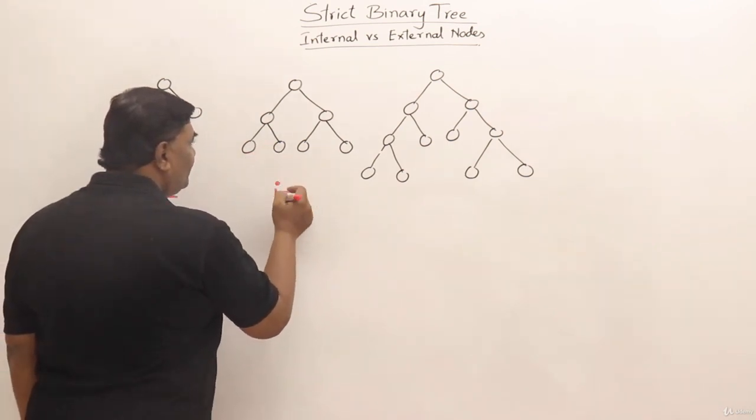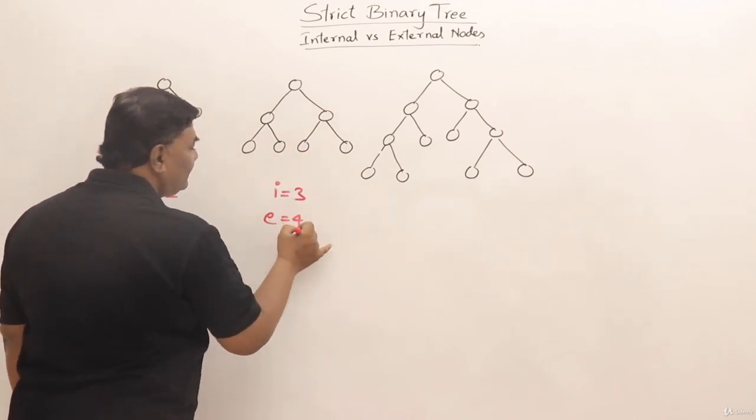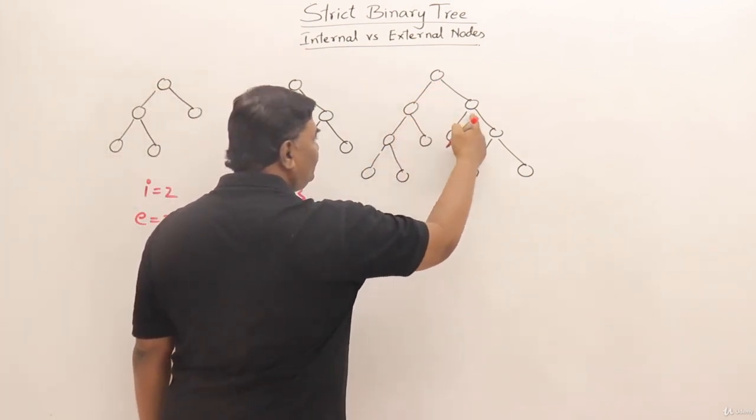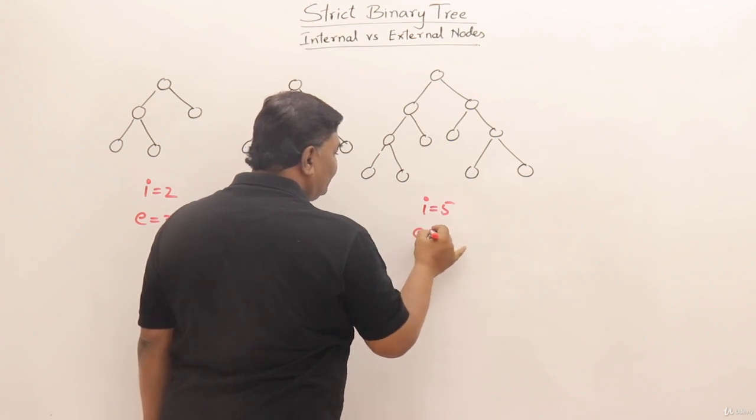In this strict binary tree, number of internal nodes 1, 2, 3. External nodes 1, 2, 3, 4. So 4 leaf nodes are there. And in this one, internal nodes 1, 2, 3, 4, 5. Internal nodes are 5. Then how many external nodes?